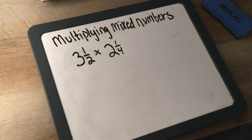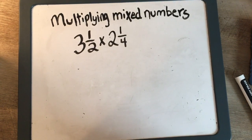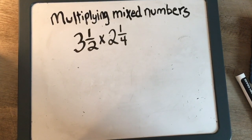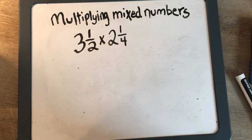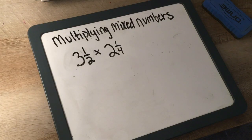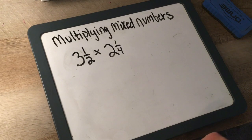Here's the problem. We have 3 and 1/2 times 2 and 1/4. When multiplying mixed numbers, the first thing you're going to do is convert the mixed numbers into improper fractions. Then you're going to multiply straight across. Before we start, what is a mixed number? A mixed number is an integer combined with a proper fraction. Now let's solve 3 and 1/2 times 2 and 1/4.